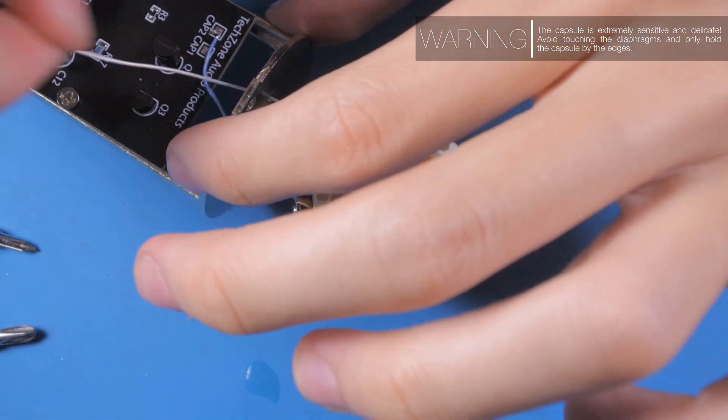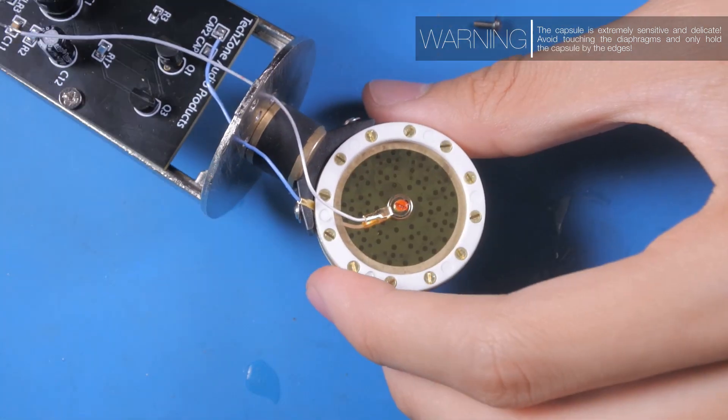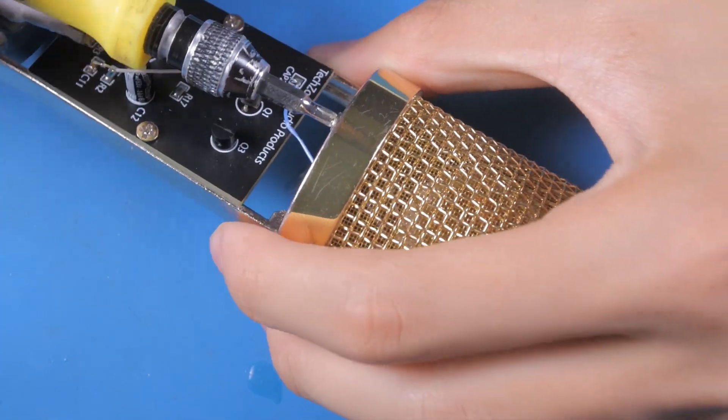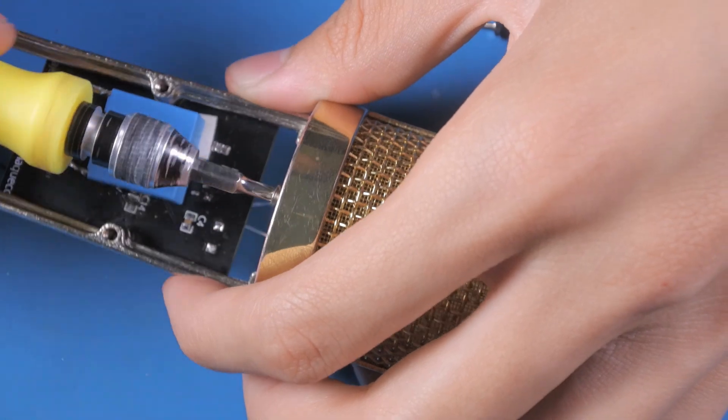After mounting the capsule securely to the holder and the main body of the mic, we carefully fed the two wires of the capsule to the two holes on the body. Then, we screwed in the head basket to secure the capsule and protect it while doing the other electrical work.